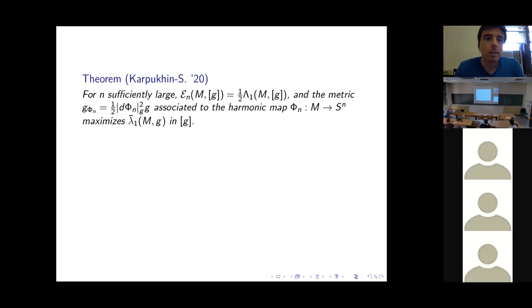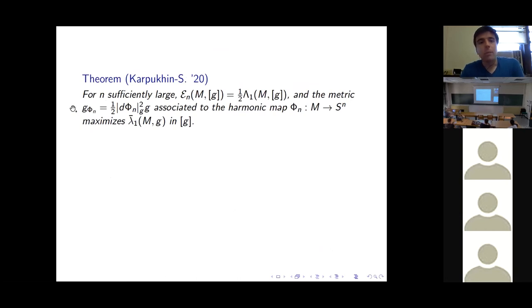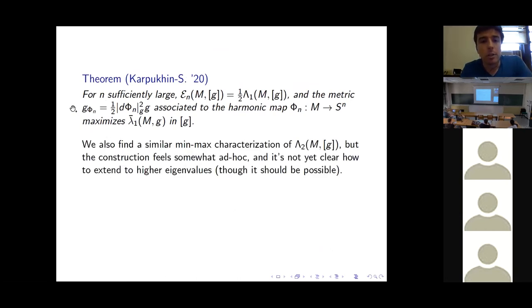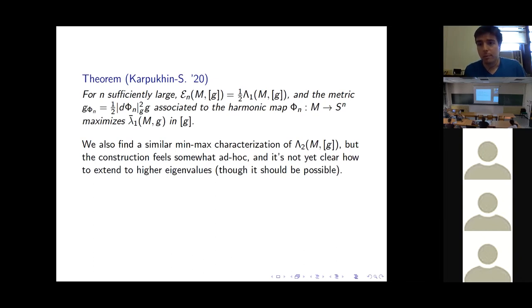Returning to the main result: for n sufficiently large, the min-max energies are exactly half the conformal supremum, and the metrics associated with these min-max harmonic maps are exactly the ones that maximize λ̄₁. We also find a similar min-max characterization for λ₂, though the construction is less geometrically natural. We believe this should extend to higher eigenvalues, where bubbles will generically appear.